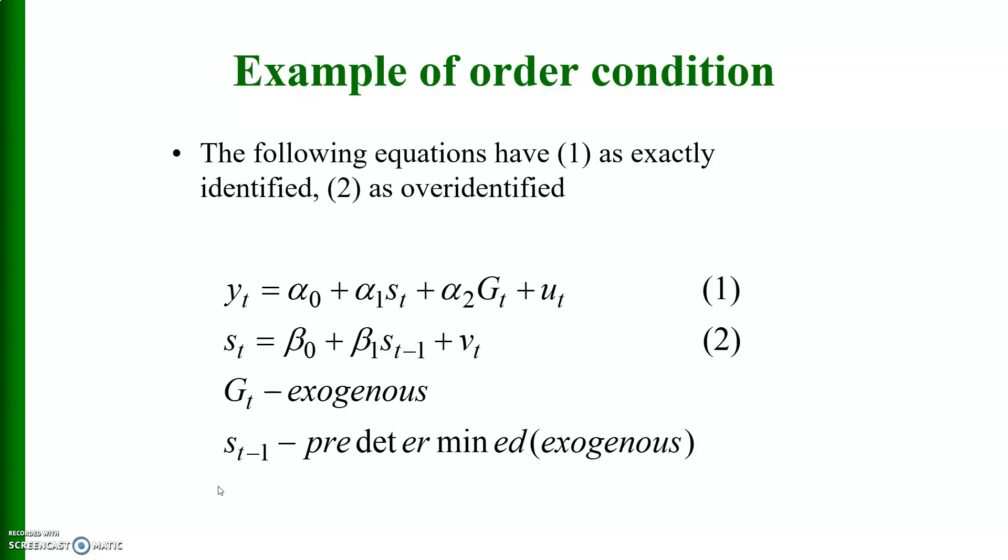Examples of order condition: the following equations have number 1 is exactly identified and equation 2 is over identified. Y_t equals alpha naught plus alpha 1 s_t plus alpha 2 g_t plus u_t, and s_t equals beta naught plus beta 1 s_t minus 1 plus v_t, where g_t is exogenous and s_t minus 1 is predetermined or exogenous.